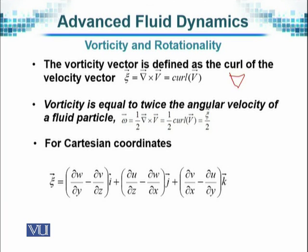Vorticity is equal to twice the angular velocity. Angular velocity is different from vorticity. Angular velocity is denoted by ω, and ω is half of curl of V. Therefore, in our notation, ω = ζ/2.